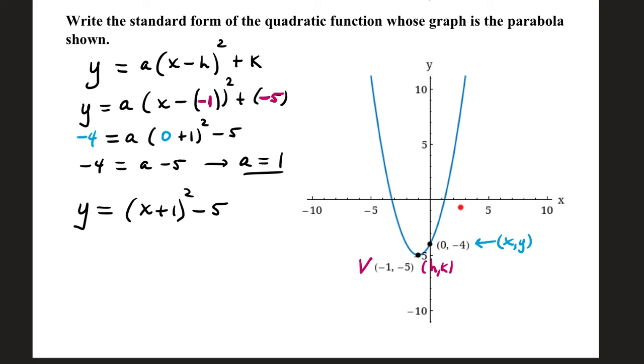And then in class, we did a brief example of if I give you a graph with a vertex and a y-intercept. It is possible to go backwards and write the standard form of your quadratic function. The standard form of a quadratic function is either f(x) or y equals a times (x minus h) squared plus k, where (h, k) is what your vertex is.